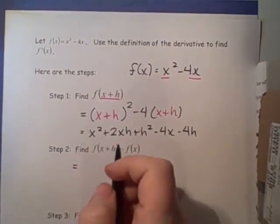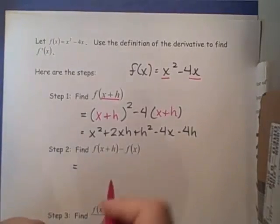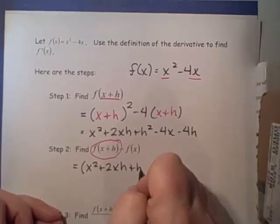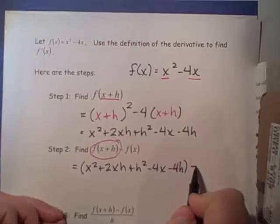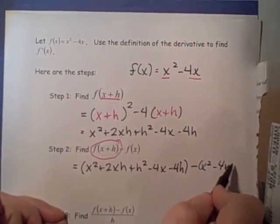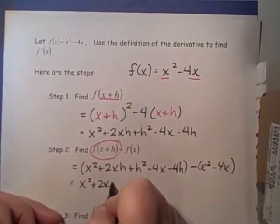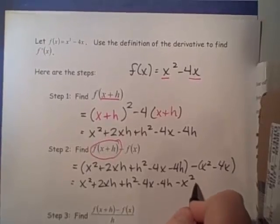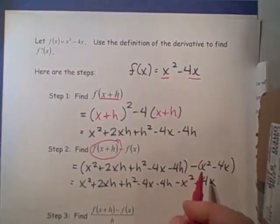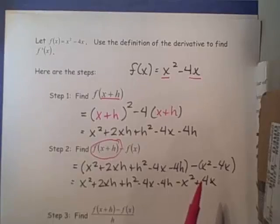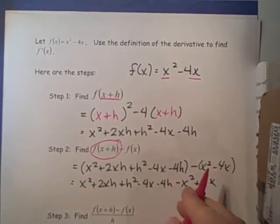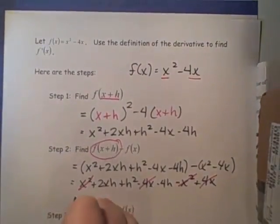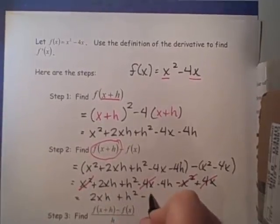Step two: take what we found in step one, f of x plus h, and subtract off f of x. So we have x squared plus 2xh plus h squared minus 4x minus 4h, minus the quantity x squared minus 4x. Distribute the negative to get minus x squared plus 4x. With polynomials, whatever was in your f of x is going to cancel. The x squared terms cancel and the 4x terms cancel, leaving us with 2xh plus h squared minus 4h.